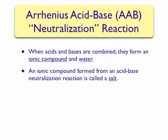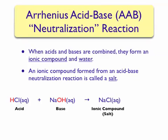This reaction is shown below. When hydrochloric acid is mixed with a solution containing sodium hydroxide, the result is sodium chloride — the salt — and water. Note that the hydrogen ion from the acid and the hydroxide ion from the base are what combine to make water. The counter ions for the acid and base, chloride and sodium respectively, are what form the ionic compound.